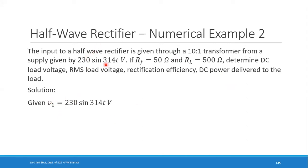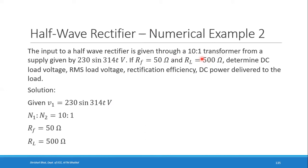The supply voltage V1 = 230·sin(314t) is the primary voltage. The turns ratio N1:N2 = 10:1. RF = 50 ohms and RL = 500 ohms. In the previous problem the turns ratio was assumed 1:1; here it is given as 10:1 and must be used.